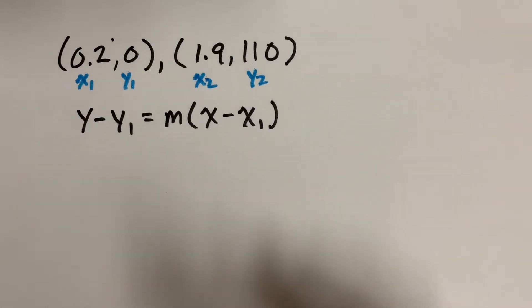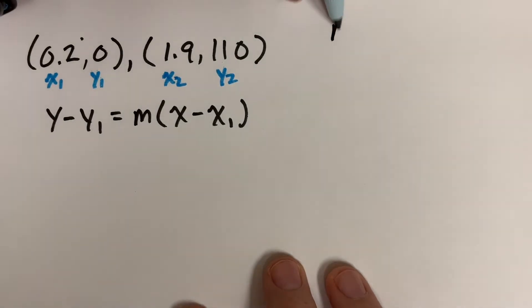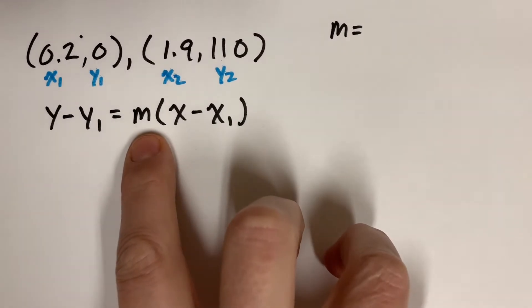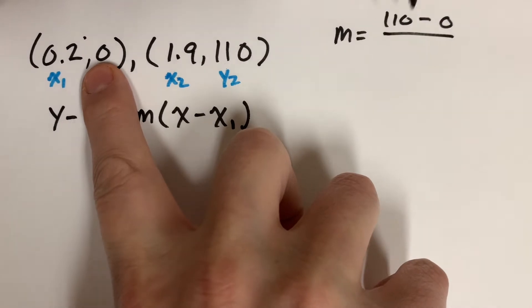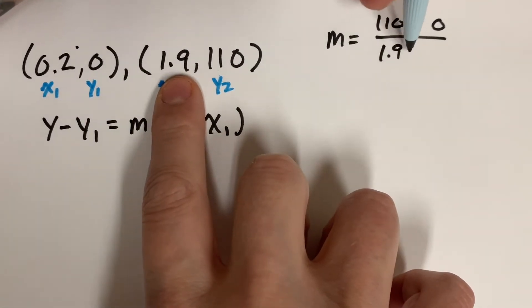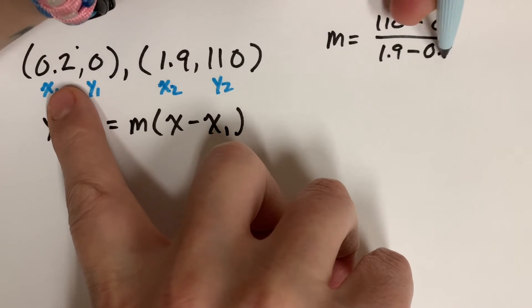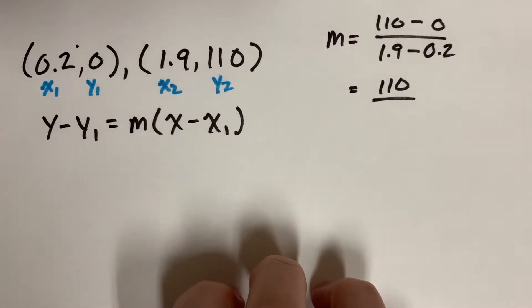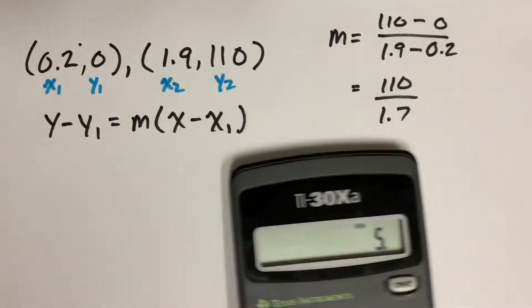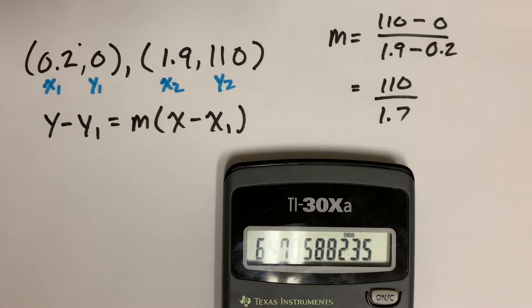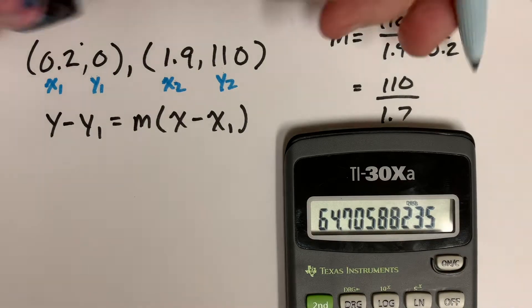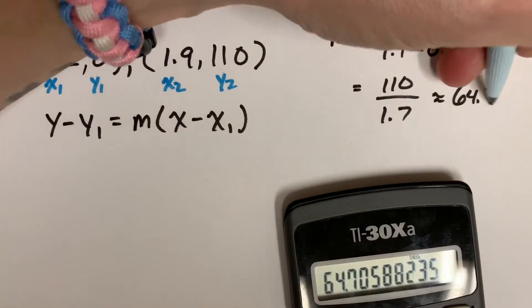I need to figure out what the slope is because I got to plug that in right here. The slope is going to be 110 minus 0 over 1.9 minus 0.2, so that's going to give me 110 over 1.7. If I take my calculator, 110 divided by 1.7, I get about 64.7 approximately. So that's about 64.7, I'm going to use that for my slope.